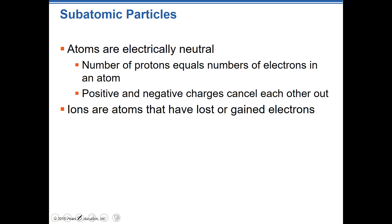For the most part, atoms are basically electrically neutral. If left to themselves, they're electronically neutral, meaning they have an equal number of protons and electrons. The number of protons in the nucleus equals the number of electrons outside it in a perfect world. The positive charge of the proton cancels out the negative charge of the electrons, making the atom neutral — the positives and negatives cancel each other out.